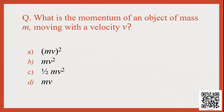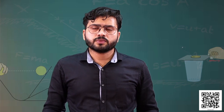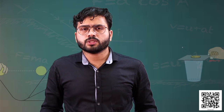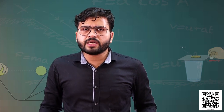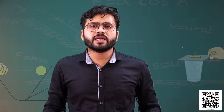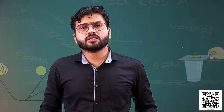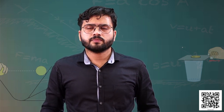Another question: What is the momentum of an object of mass m moving with a velocity v? As we know, momentum is defined as the product of mass and velocity, so the answer is mv — option D. Next class we will continue with the third law of motion. Till then, go through your NCERT textbook and try to solve more numericals on the second law. Thank you.